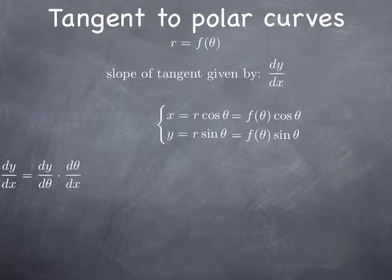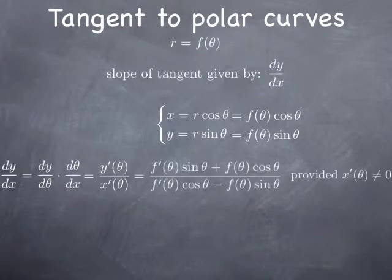We want to calculate dy over dx, and we can use the chain rule to calculate this rate of change of y with respect to x as the rate of change of y with respect to theta multiplied by the rate of change of theta with respect to x. That later one, d theta over dx, is really the reciprocal of the rate of change of x with respect to theta. So what we have is really the quotient of the derivative of y with respect to theta with the derivative of x with respect to theta. We can calculate this because we have x and y as functions of theta, specifically as product functions, so we can use the product rule.